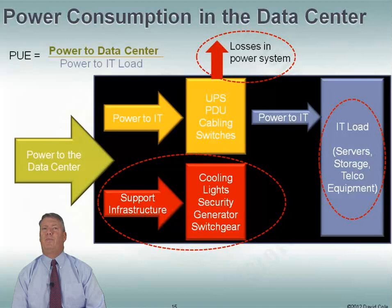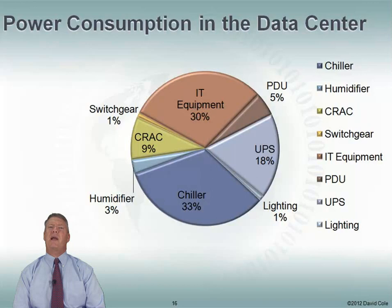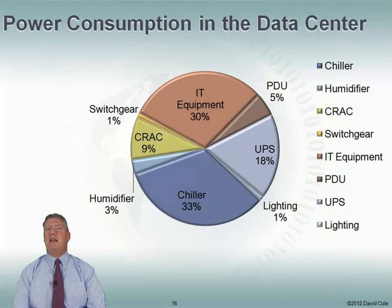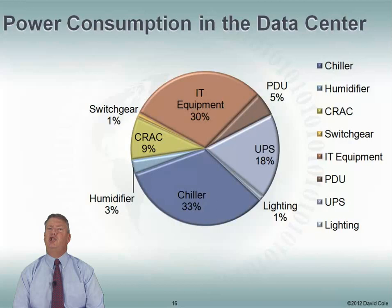Let's look at power consumption in the data center in more detail. Power going to IT equipment might be around 30%; the computer room air conditioner unit maybe 9%; humidifier, chiller, UPS, PDU, and lighting each take their share. The reason I break this up is that if I want to improve energy efficiency, I'm not going to start with lighting because that's only 1% of my total load. I want to look at the big areas: IT equipment, the CRAC unit, the chiller, and the UPS, because those are taking the bigger chunks.